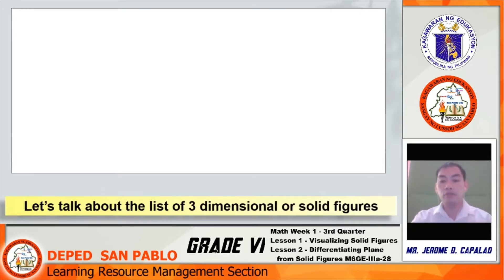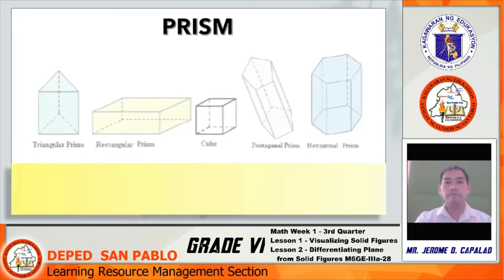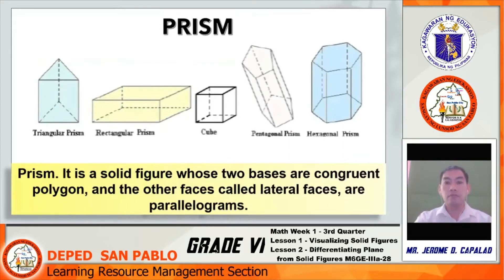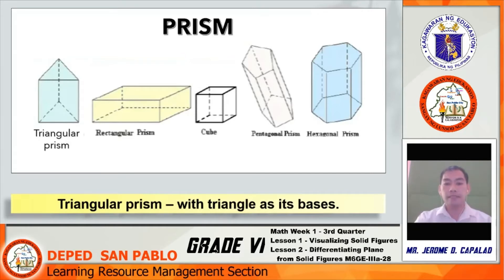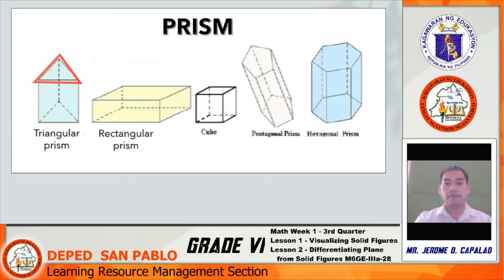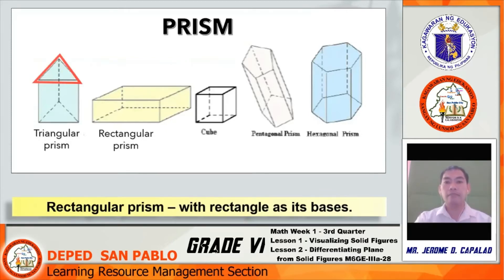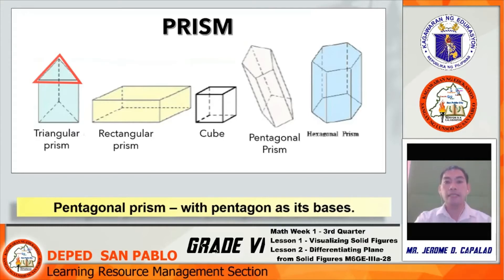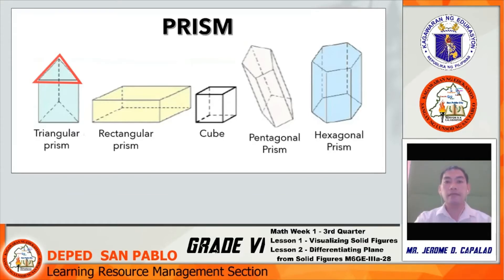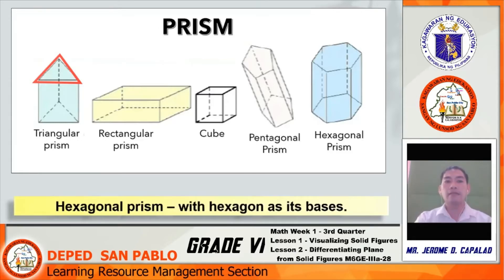Let's talk about the list of three-dimensional or solid figures. Prism: it is a solid figure whose two bases are congruent polygons and the other faces, called lateral faces, are parallelograms. Types include: triangular prism (with triangle as its bases), rectangular prism (with rectangle as its bases), cube (all faces are square), pentagonal prism (with pentagon as its bases), and hexagonal prism (with hexagon as its bases).